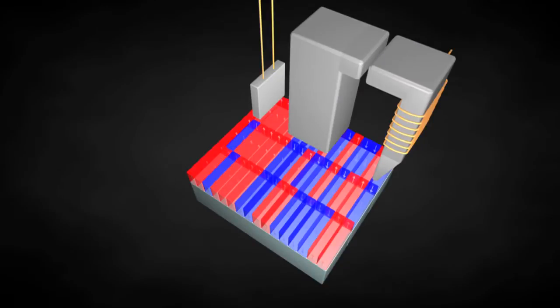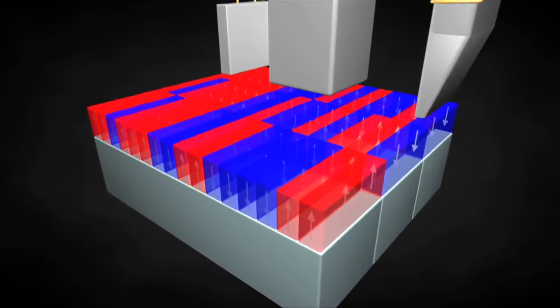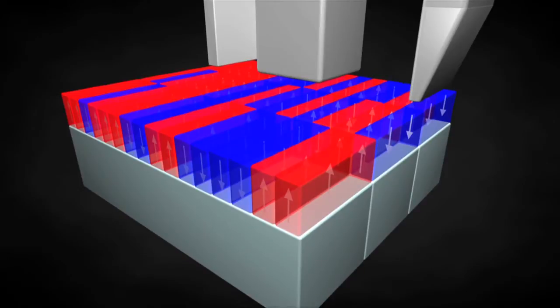We saw earlier that information can be stored by magnetizing very small regions of a hard disk or some other storage medium. Each of these regions corresponds to one unit of information called a bit. If we want to store more data in a smaller device, we have to reduce the size of these regions.